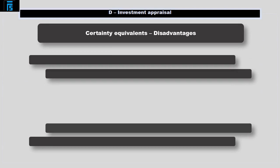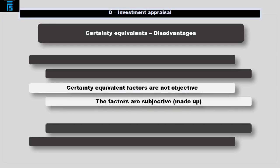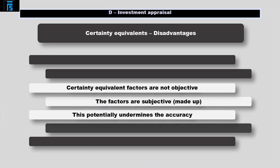There is nothing wrong with this calculation in principle. But in practice, the certainty equivalent factors cannot consistently be derived from anything objective. They will in effect be subjective, made-up numbers, which potentially undermines the accuracy of the overall answer.